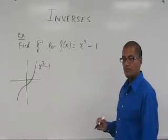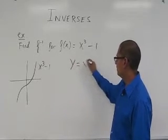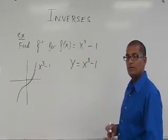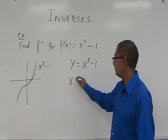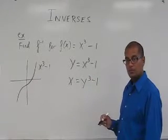And what does this inverse look like? So to find the inverse, we take y equals x cubed minus 1, and we interchange the variables. So we have x equals y cubed minus 1, and we solve for y.